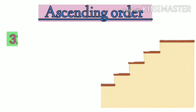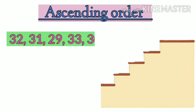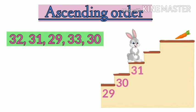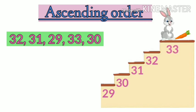So the pattern is 32, 31, 29, 33 and 30. So let the rabbit jump. What will be the first number? Think. Yes, the first number and the smallest number is 29, then 30, 31, 32 and the last number is 33.